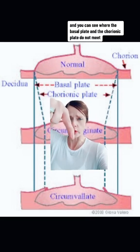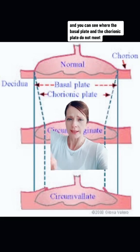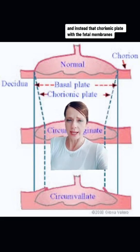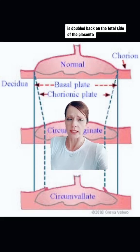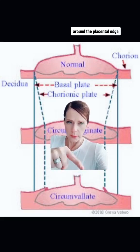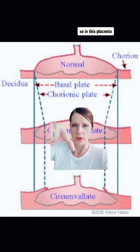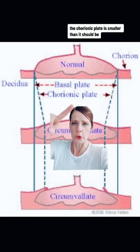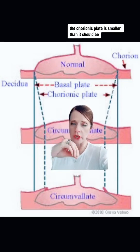Whereas down here, you can see where the basal plate and the chorionic plate do not meet. Instead, that chorionic plate with the fetal membranes is doubled back on the fetal side of the placenta around the placental edge. So in this placenta, the chorionic plate is smaller than it should be.